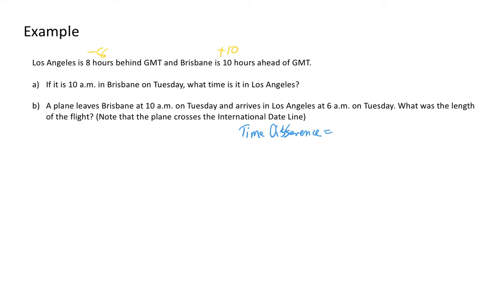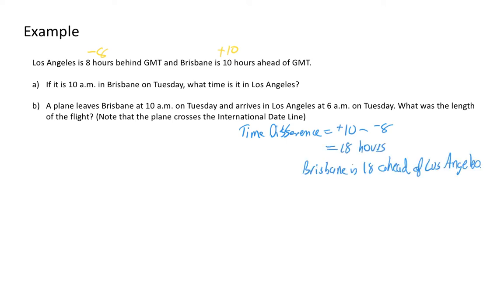We take the bigger zone and minus the smaller zone. The bigger zone is Brisbane at plus 10, so: plus 10 minus negative 8, which equals 18 hours. So Brisbane is 18 hours ahead of Los Angeles.